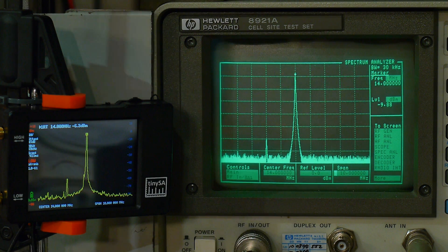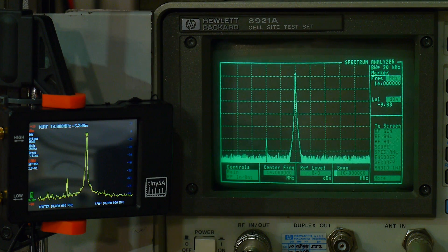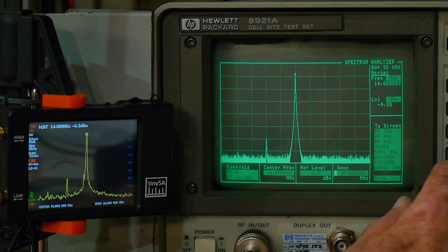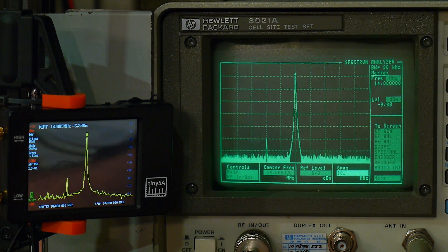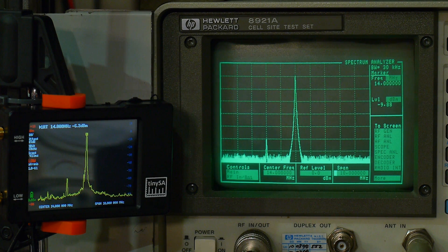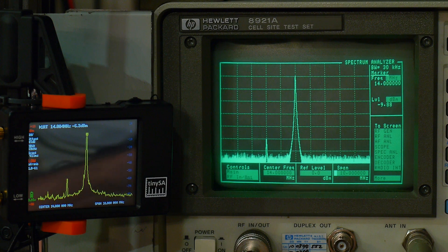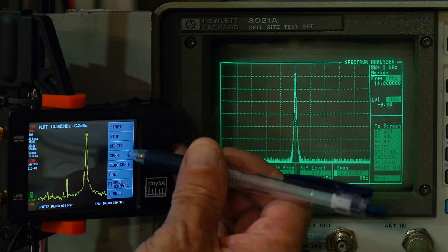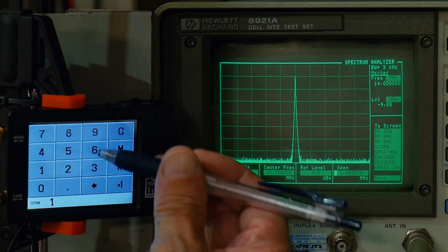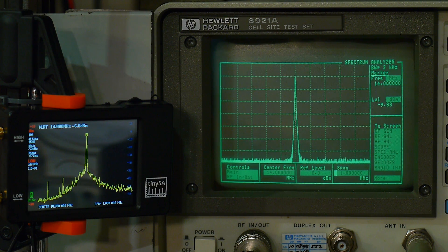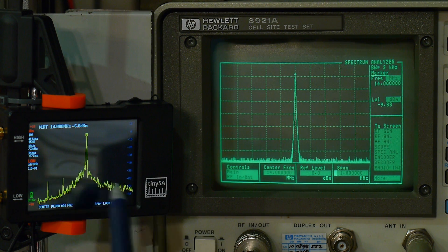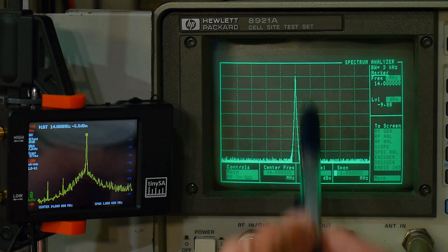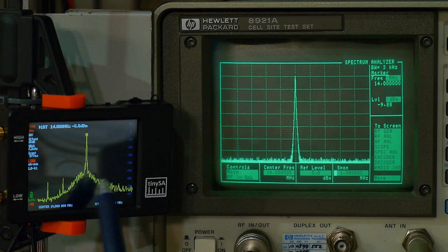The first test we're going to do is zoom in. We have a 100 megahertz sweep right now. Let's go to a 1 megahertz sweep on both. You can see that we have a lot of phase noise on the TinySA. We have the carrier still, it's a very clean carrier, but on the SA we're getting a lot of phase noise.